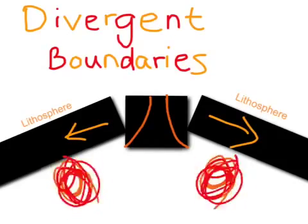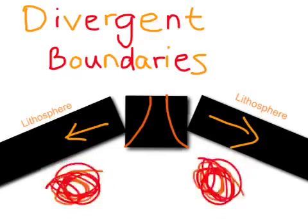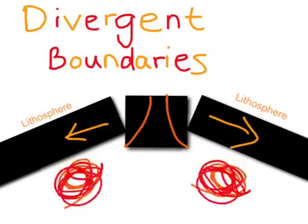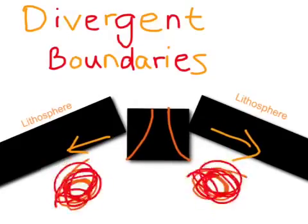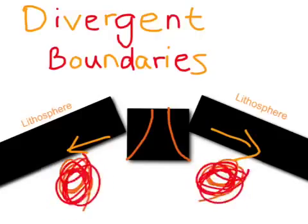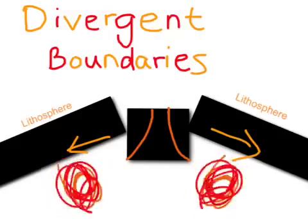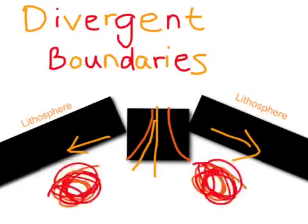Earth's surface is pulled apart as the plates separate along the boundary. The block between the faults cracks and drops. The sinking of the block forms a rift. Magma then seeps up to fill the cracks, and new crust is formed.